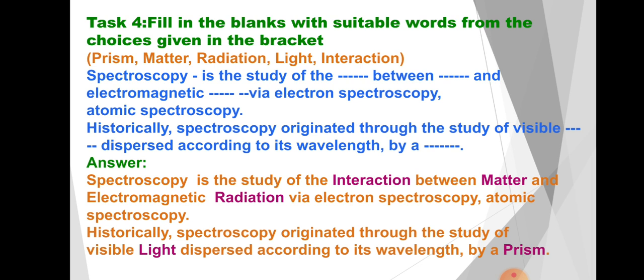Answer: Spectroscopy is the study of Interaction between Matter and Electromagnetic Radiation via electron spectroscopy, atomic spectroscopy. Historically, spectroscopy originated through the study of visible Light dispersed according to its wavelength by a Prism.